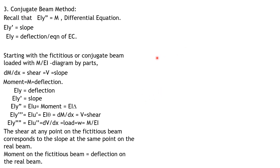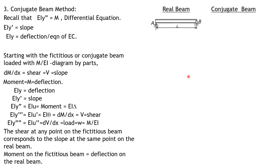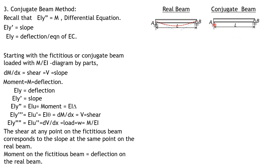To master the conjugate beam method, let's examine different cases for constructing the conjugate beam from the real beam. For a beam with simple supports at both ends, the conjugate beam looks the same — because there is no moment and no deflection at the ends, so there should be no moment in the conjugate beam at those points. However, there is rotation of the tangents at A and B, so there is shear, and the support conditions remain the same.